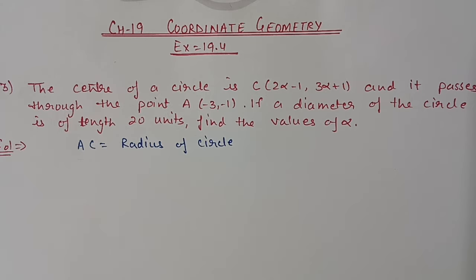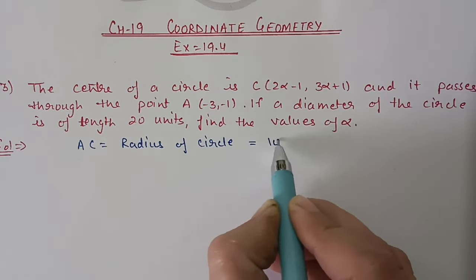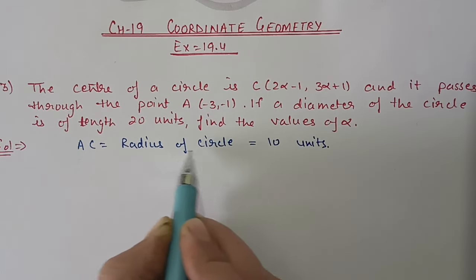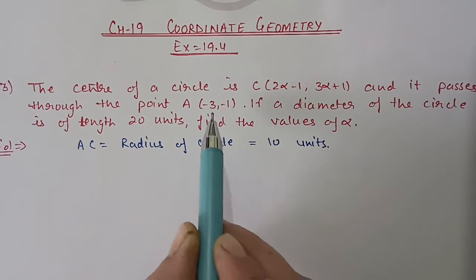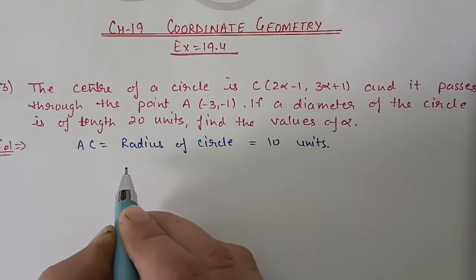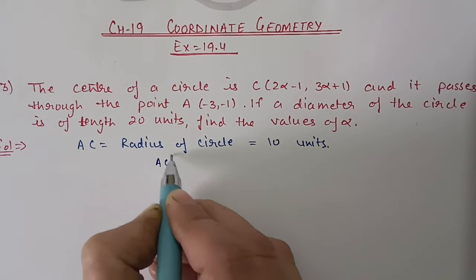If a diameter of the circle is of length 20 units, find the value of alpha. Since diameter is 20, the radius will be 10. The distance from center to the point on the circle equals the radius, so radius equals 10 units. We will find the radius using points A and C with the distance formula, so AC² = 10² = 100.